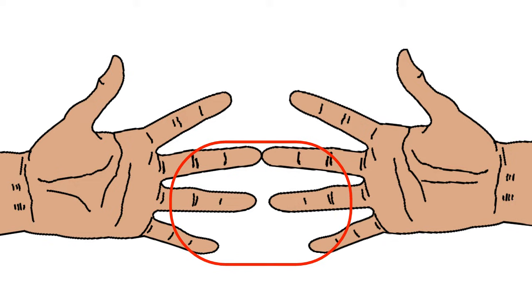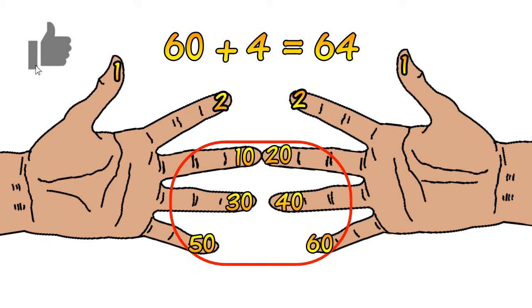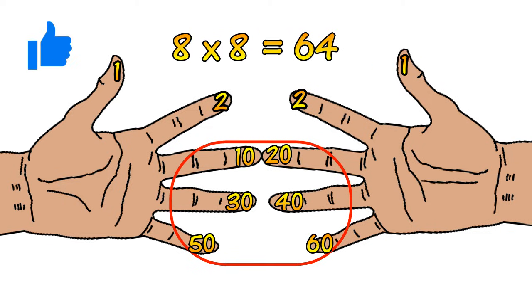So we have 2 fingers joining that's 10, 20 and we have a further 4 fingers hanging below. So that means 40. So altogether there's 60 including the join and below. Then above the join we have 2 fingers on the left hand and 2 fingers on the right hand. So we have 2 times 2 which is 4. Adding the 2 results 60 plus 4 equals 64. So 8 times 8 equals 64.